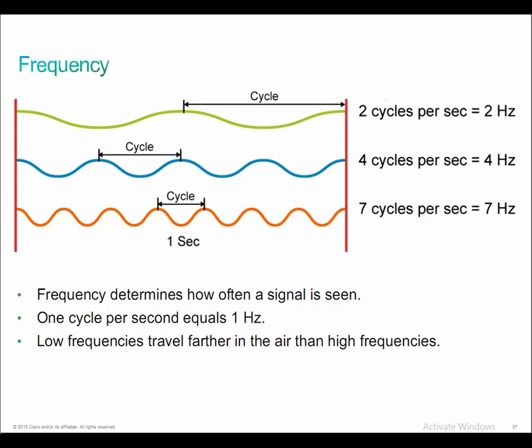We call that a cycle. Two cycles per second is two hertz, four cycles per second is four hertz, seven cycles per second is seven hertz, and so on. There is a difference between period and frequency. Longer and slower waves, like ocean waves, tend to be described by a period rather than a frequency, but we don't really use the term period in the concept of wireless.